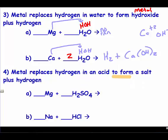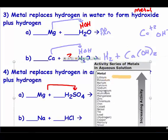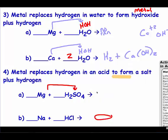The last single replacement rule is a metal replaces hydrogen in an acid to form a salt plus hydrogen. Magnesium is trying to kick out hydrogen. Since it's an acid, it will kick out all the hydrogens if it can. Magnesium is above hydrogen on the acid line of the chart, so magnesium kicks hydrogen out. Hydrogen is diatomic. Magnesium combines with sulfate — magnesium is a plus two, sulfate is a negative two — so we get MgSO₄. We balance the equation, and in this case it's already balanced.